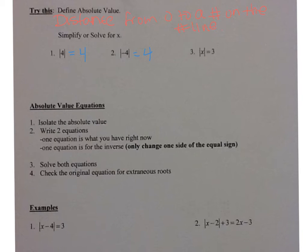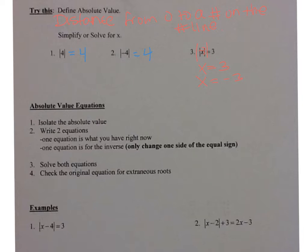Now if you look at the absolute value of x equals three, what could x be? If x equals three, the absolute value of three is three. But x could also be negative three, because the absolute value of negative three is also three. So we have two answers: x can be either three or negative three.